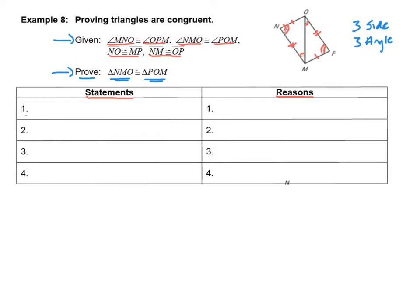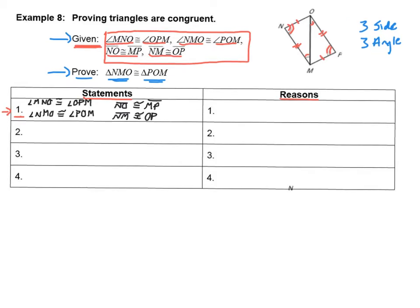The first statement you're going to start with is your given information. I'm going to take all the information they gave me and copy it into my first statement — I sorted it with angles on the left and sides on the right. And my first reason: how did I know all this information? I knew it because it was given. This will always be your first statement and first reason: the given information, the reason being that it was given.